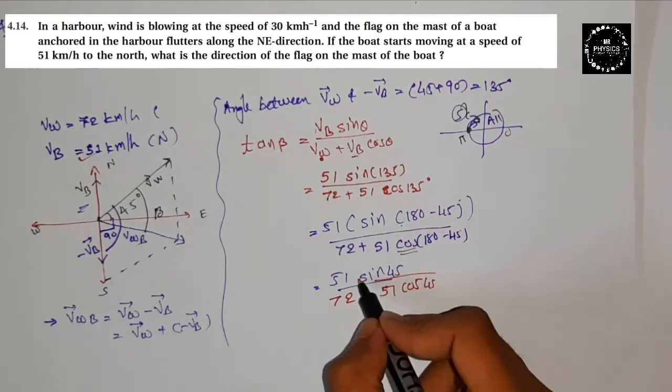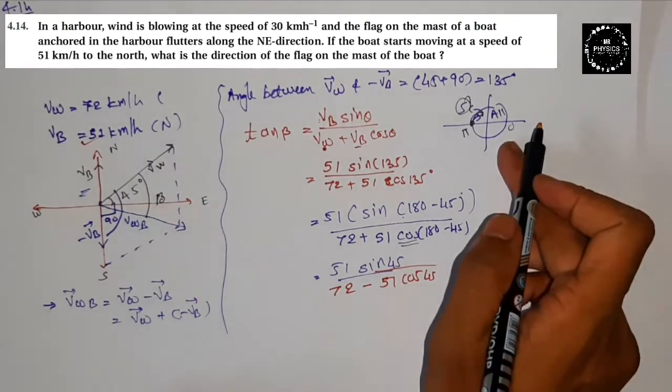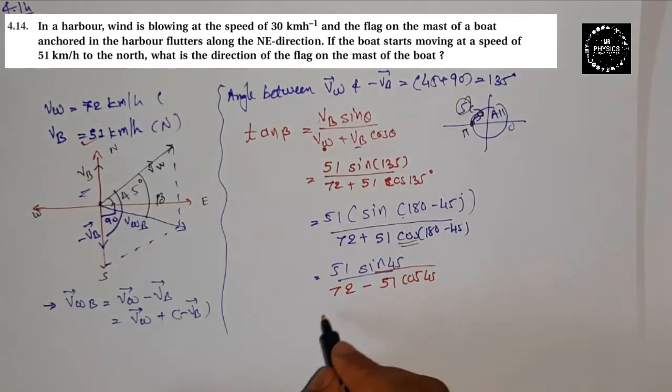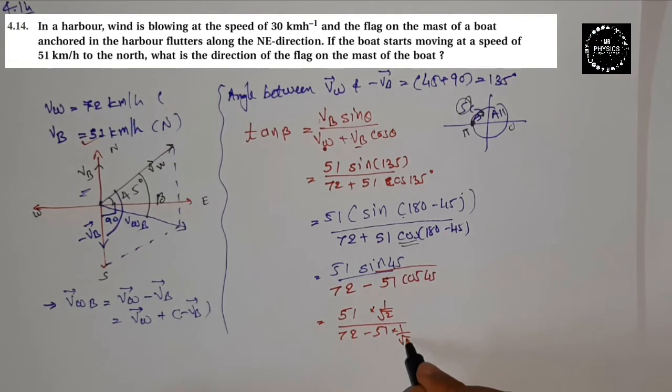So this is 72 minus 51 cos 45. Positive, negative, 10th mathematics. So I need to explain this unit circle. 51 sin 45 means 1 upon root 2 divided by 72 minus 51, this will be 1 upon root 2.